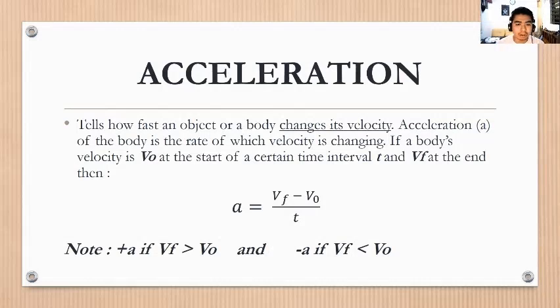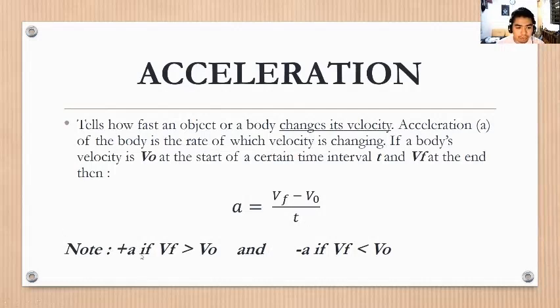Acceleration tells how fast an object or body changes its velocity. The acceleration of a body is the rate at which velocity is changing. If a body's velocity is v₀ at the start of a time interval and v_f at the end, then acceleration equals final velocity minus initial velocity all over time. If the final velocity is greater than the initial velocity, we have positive acceleration — the object is accelerating. If the final velocity is less than the initial velocity, we have negative acceleration, or decelerating.